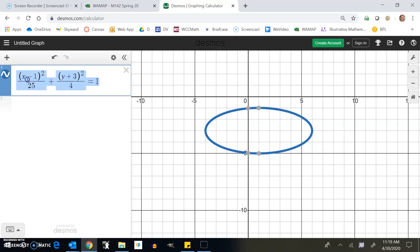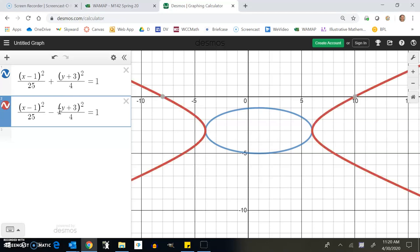So I'm gonna copy this whole thing and paste it. And then again my question is how does this graph change if this becomes a negative? I'm subtracting the y. Well let's see. Look at that.